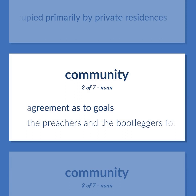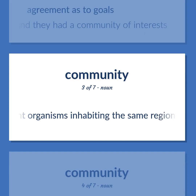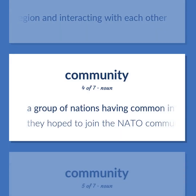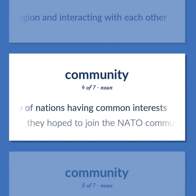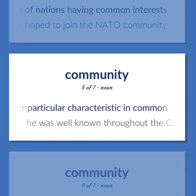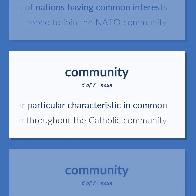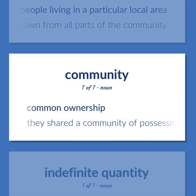Community: agreement as to goals — the preachers and the bootleggers found they had a community of interests. Ecology: a group of interdependent organisms inhabiting the same region and interacting with each other. A group of nations having common interests — they hoped to join the NATO community. A group of people having a religion, ethnic, profession, or other particular characteristic in common — he was well known throughout the Catholic community. A group of people living in a particular local area — the team is drawn from all parts of the community. Common ownership — they shared a community of possessions.